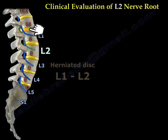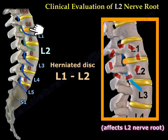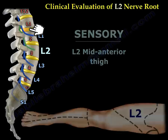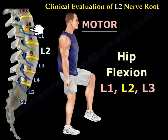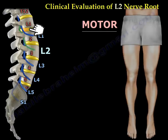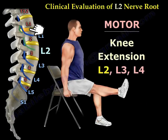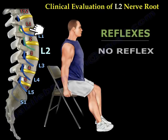Disc herniation between L1 and L2 will affect the L2 nerve root. The sensory changes will be in the mid-anterior thigh. The motor will be hip flexion (L1, L2, L3), hip adduction (L2, L3, L4), and knee extension (L2, L3, L4). There is no reflex for the L2 nerve root.